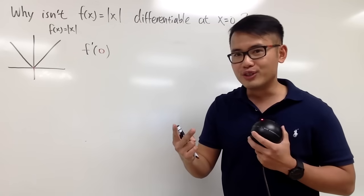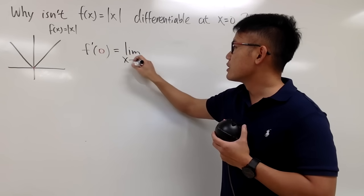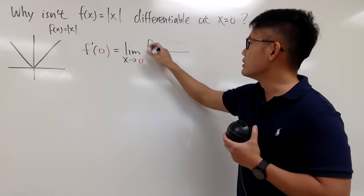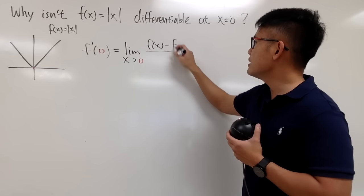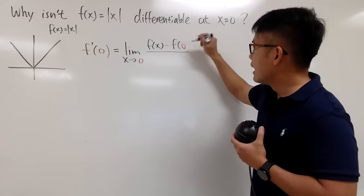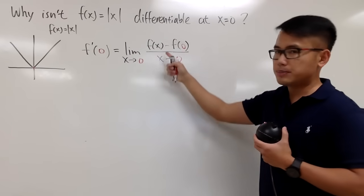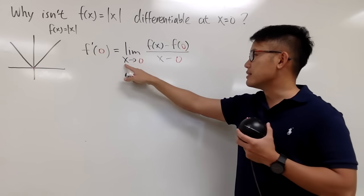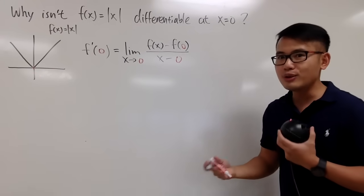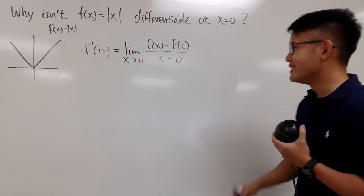Anyway, this right here has two versions. I will use the following one. This is equal to the limit as x goes to 0 of f of x minus f of 0, all over x minus 0. Notice this right here is pretty much the slope formula. And when you have x approaching this point, you get the slope of the tangent line. There's also another definition in the form of h approaching 0, but maybe you can look that up and try it on your own.